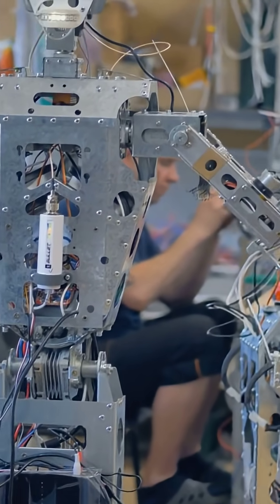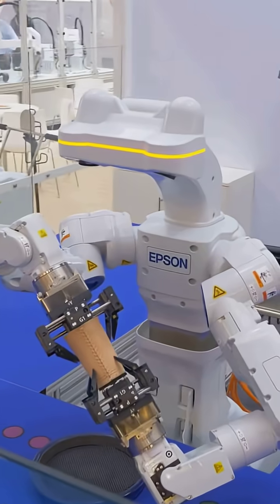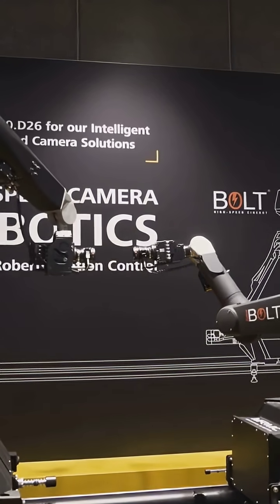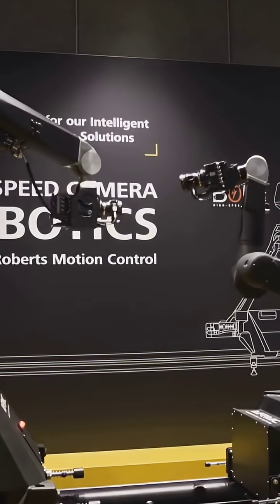Key tricks that enable haptic AI are threefold: closed-loop control lets robots react instantly to touch, high-resolution touch sensors capture tiny textures and pressure, and training in realistic simulated environments precedes real-world practice.